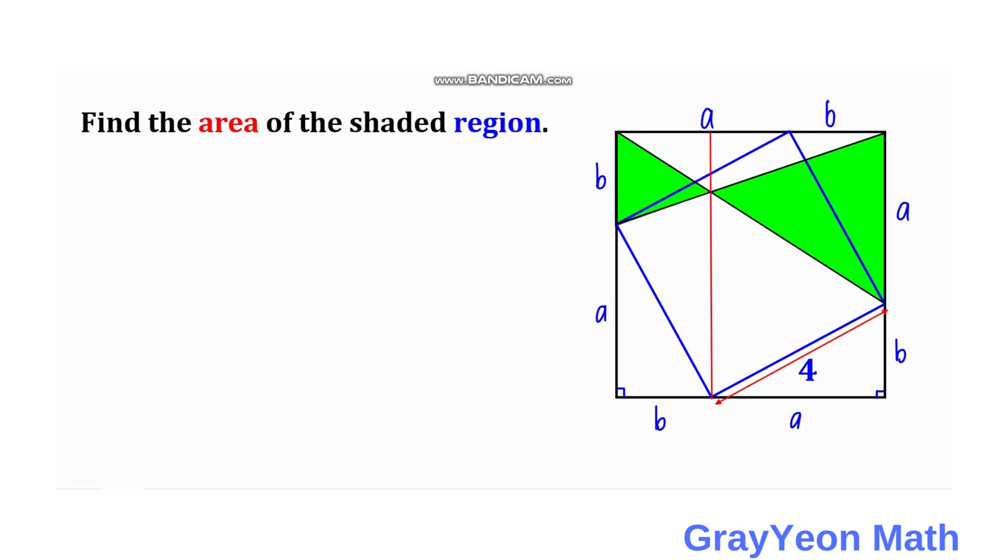Okay, so notice that if you focus on this right triangle, the legs are actually a and b, and the side length is actually 4 for the hypotenuse. So we have a² + b² = 4², and that is 16. So a² + b² = 16.